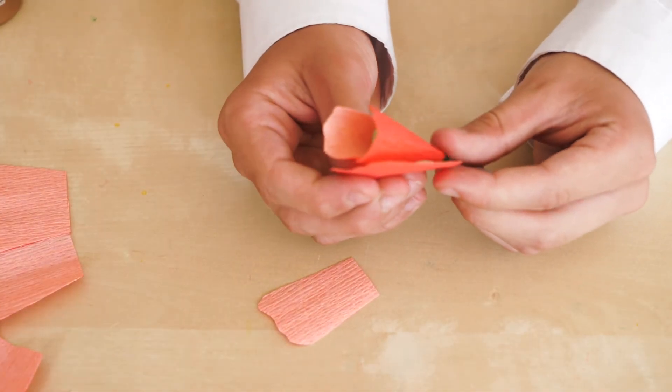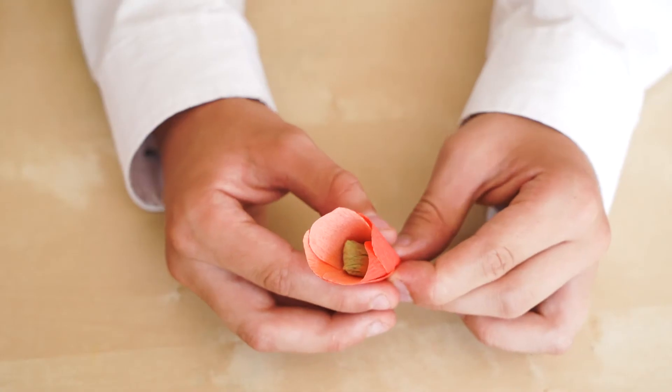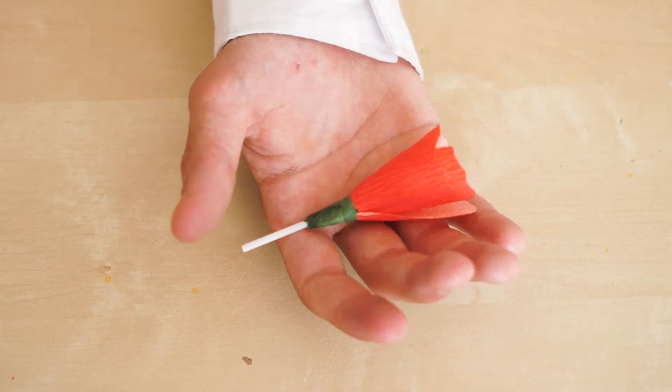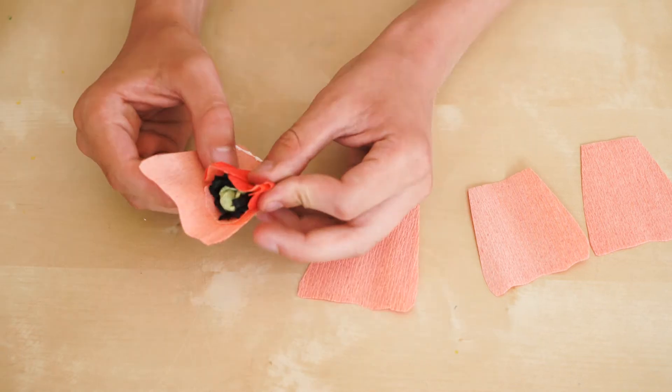Keep on doing that on the opposite side. There should be one on each side. Hold that layer in place with a bit of floral tape. Glue on the bigger petals.